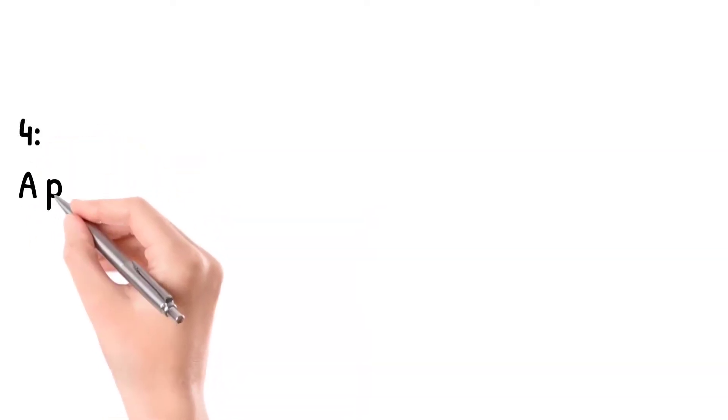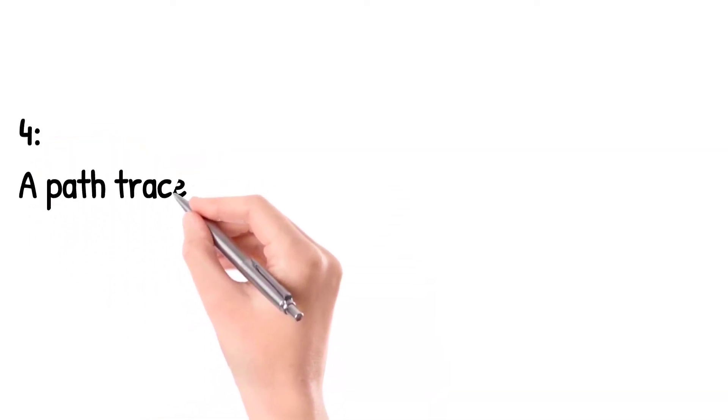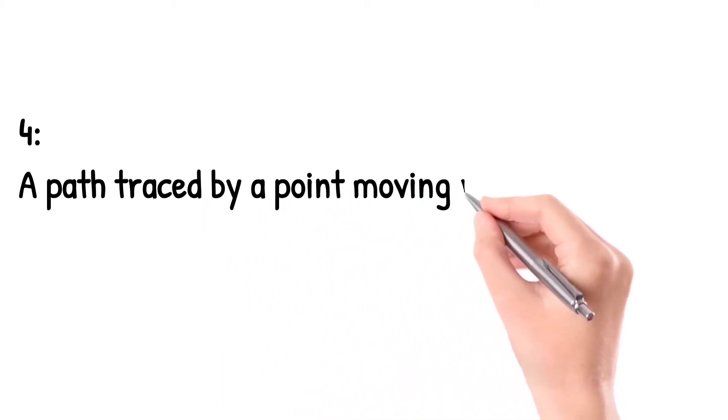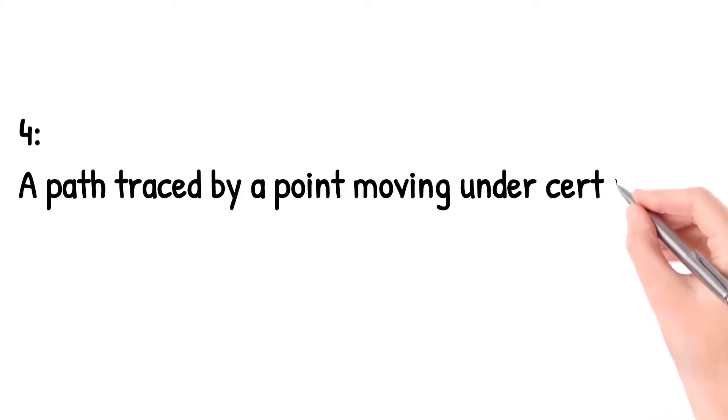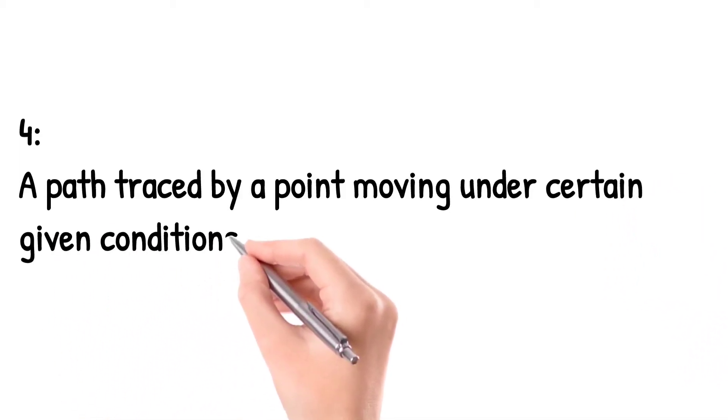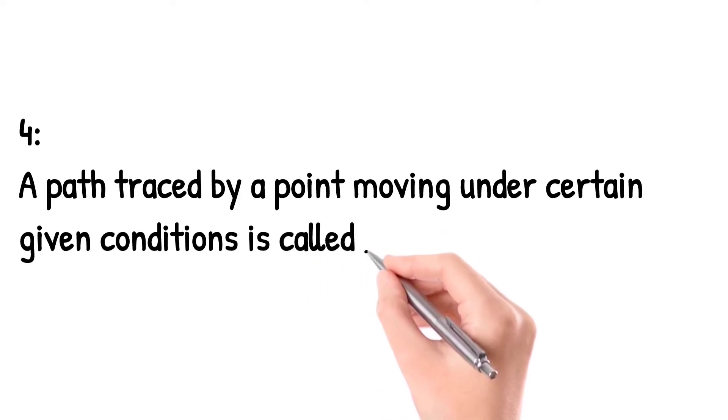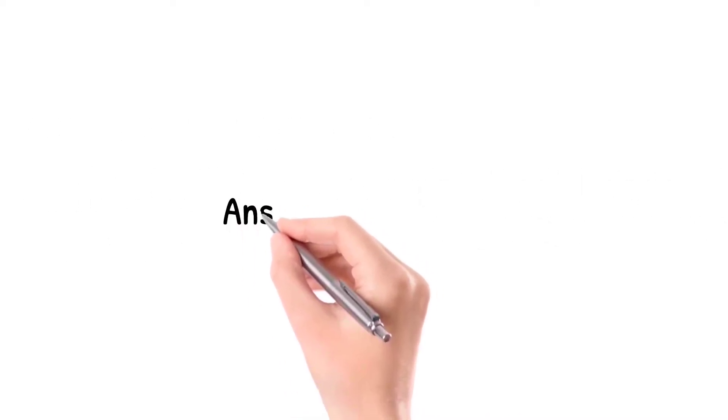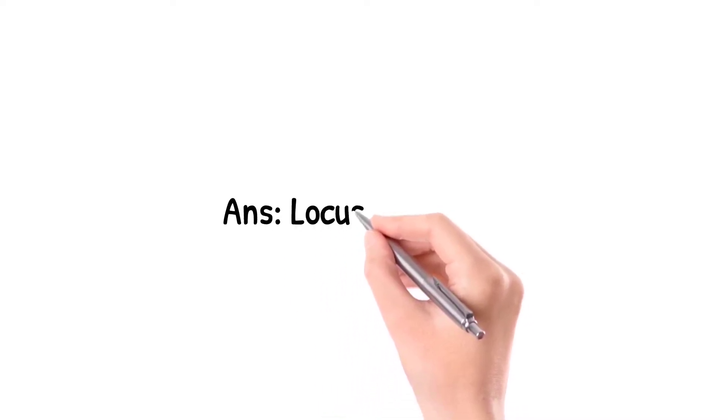Question number 4: A path traced by a point moving under certain given conditions is called? Answer is locus of a point.